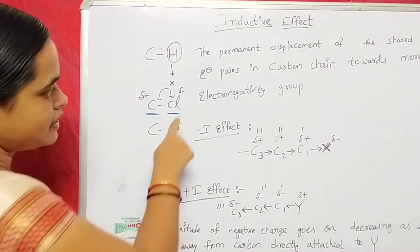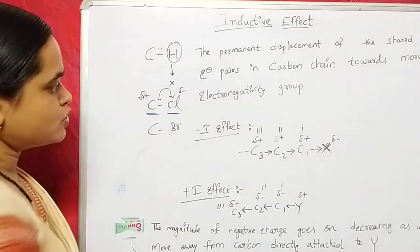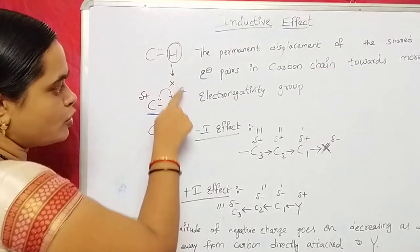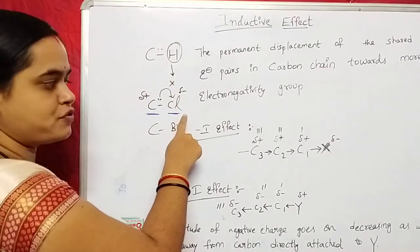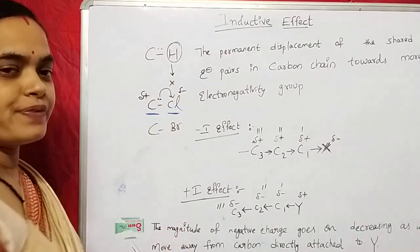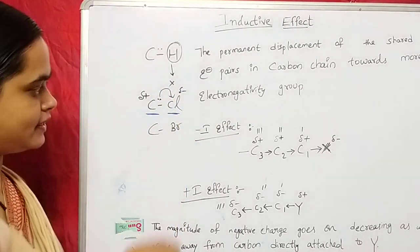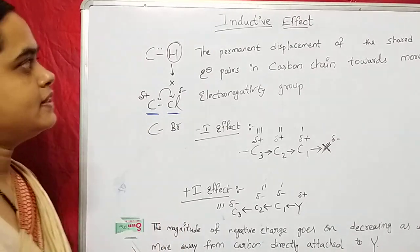Because chlorine is an electronegative atom, it attracts the shared pair of electrons towards itself. So, chlorine gets a partial negative charge and the carbon gets a partial positive charge.